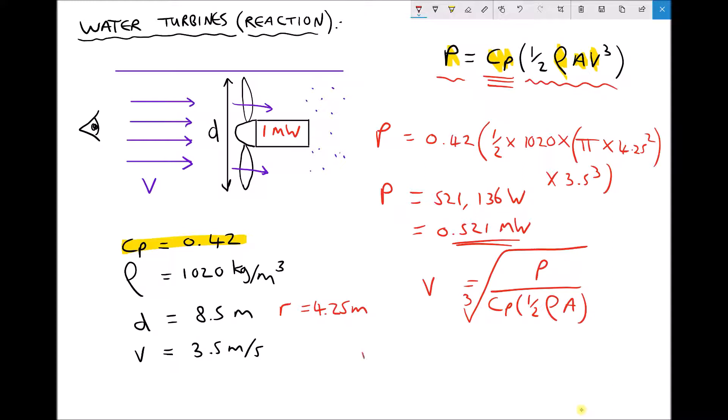Next we can plug in some values. So the velocity that corresponds with our power of 1 megawatt would be the cube root of 1 megawatt. Well 1 megawatt is 1 times 10 to the 6 watts divided by our coefficient of power which will remain unchanged times a half times the density times the swept area which we said was pi times 4.25 squared. Now when we run all of that through the calculator, we get a velocity equal to 4.35 meters per second.